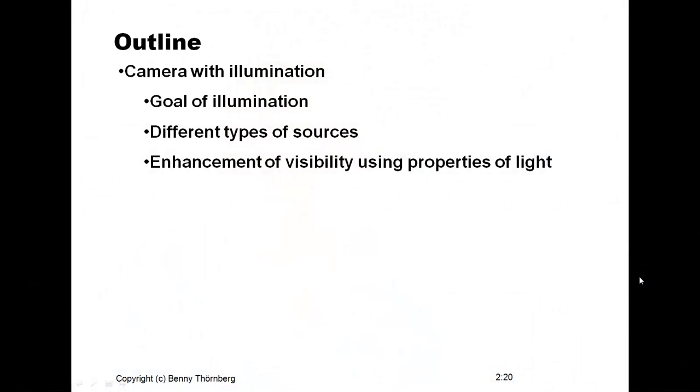We can control the environment in terms of illumination: what kind of light is used, wavelength and intensities, whether it's diffused or directed light, and in which direction we are using the light. One could summarize this into the goal of illumination — what do we actually want to achieve by adding a source for illumination to the machine vision system, and what are the different kinds of sources of light that we have available?